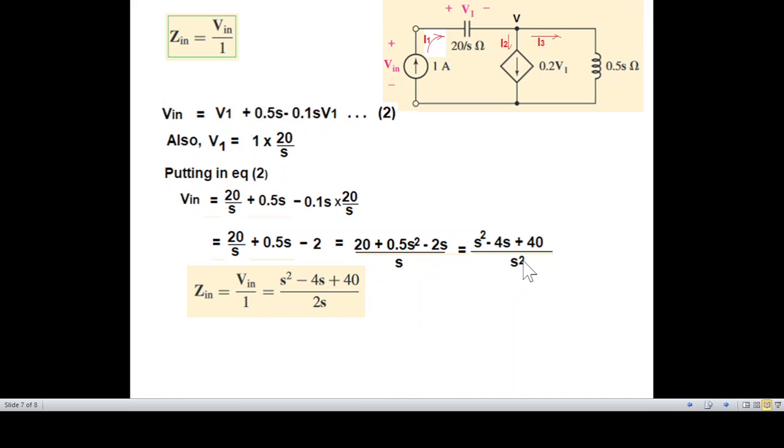So this is V_in. Now Z_in, as we said, is V_in over 1, so this V_in divided by 1. There's a mistake here also, this will not be s squared, this will be 2s. When you solve it will be 2s. Anyway, this is Z_in.